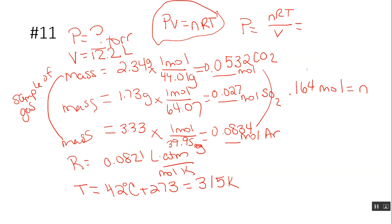Now it's just a matter of plugging in what you know. We didn't know moles but we have mass, which means we can convert to moles. So that's what I did. I took my mass of CO2 divided by my molar mass and I got 0.0532. I took my mass of SO2 divided by my molar mass, and then I took my mass of argon divided by my molar mass. I was able to get my data for all three.